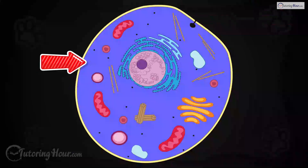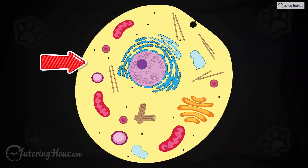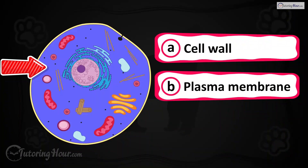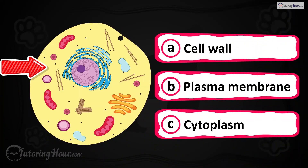Can you identify the highlighted part of the cell? Is it A) cell wall, B) plasma membrane, or C) cytoplasm?